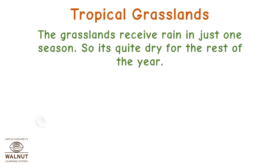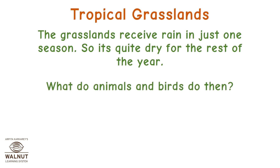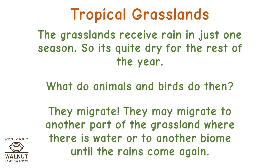The grasslands receive rain in just one season, so it's quite dry for the rest of the year. What do animals and birds do then? They migrate — they may migrate to another part of the grassland where there is water, or to another biome until the rains come again.